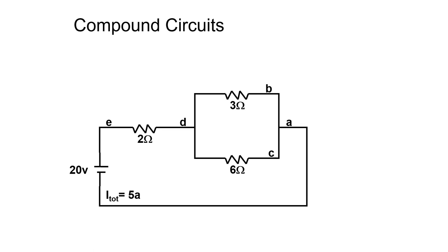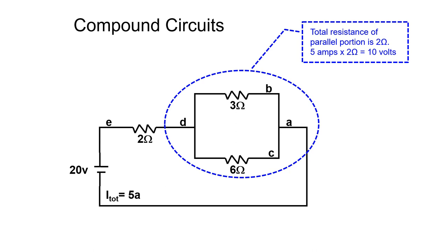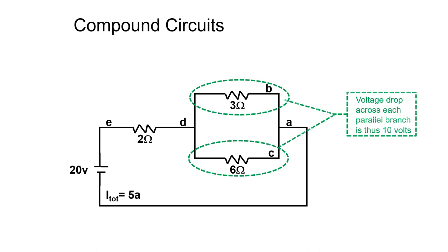An alternative method is to recognize that since the resistance across the parallel portion is 2 ohms, the voltage drop across the parallel portion is 5 amps times 2 ohms, giving 10 volts. Since there is a 10 volt drop across the parallel portion, there is a 10 volt drop across every branch of the parallel circuit. Knowing this, we can find the current through each branch by dividing the voltage drop in that branch by the resistance of that branch.